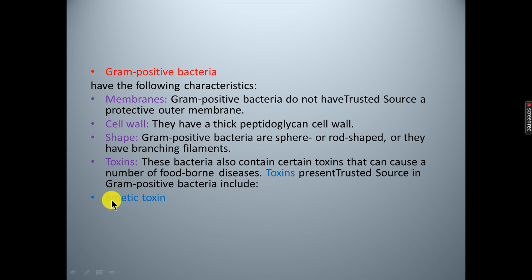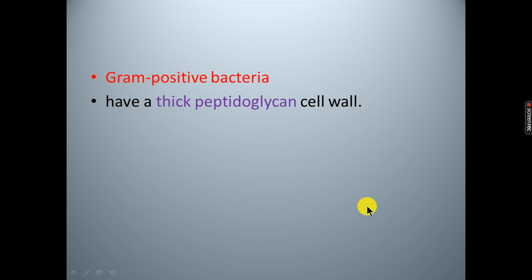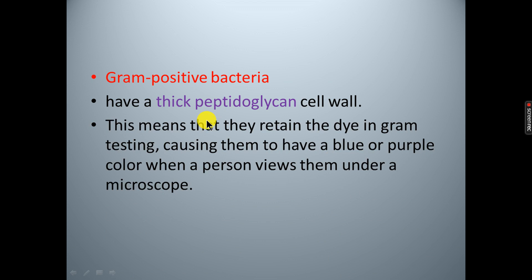These bacteria can grow and cause disease. Their toxins are a form of protein. Types of toxins include neurotoxins and enterotoxins. Gram positive bacteria have a thick peptidoglycan cell wall, which means that they retain the dye in gram testing, causing them to appear blue or purple under a microscope.